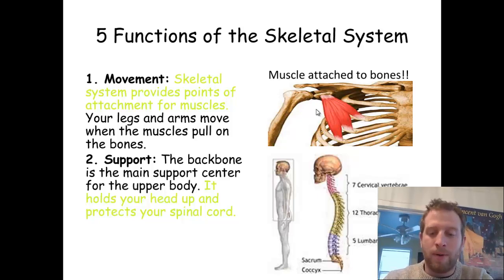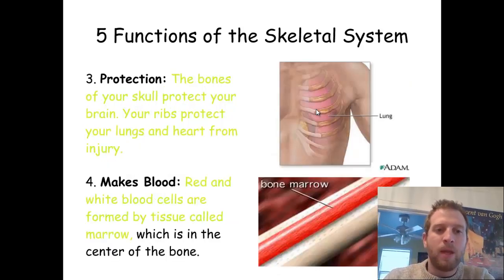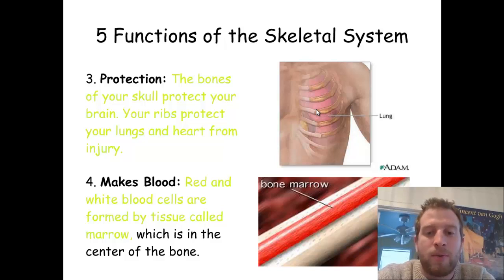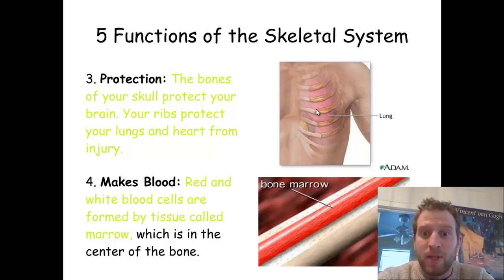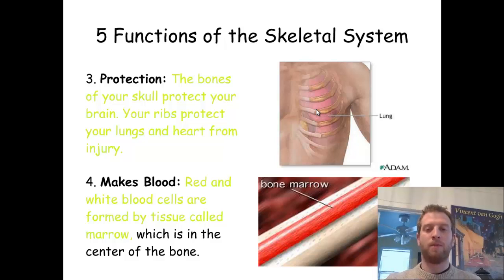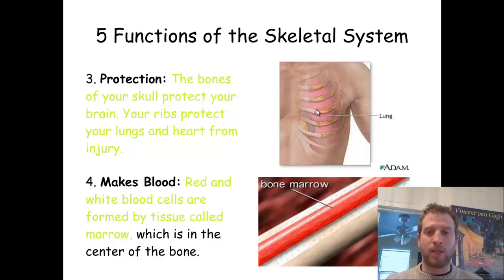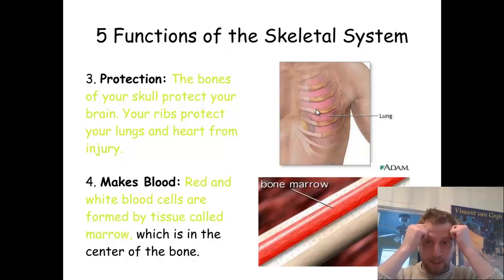It protects our spinal cord, which leads us to our next function: protection. If we didn't have bones, we have a lot of vital organs inside our body that would get damaged. Your lungs would be really easy to pierce if you didn't have your rib cage. Your heart is right in the middle — you've got the sternum protecting your heart, so that's why it's a really thick bone. It's tough to get to the heart because we've got that nice protection there. Same thing with our skull — it's protecting our brain from getting poked with stuff.